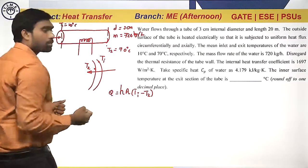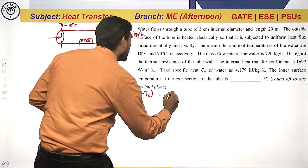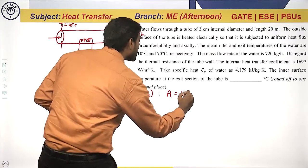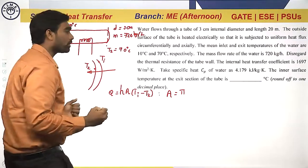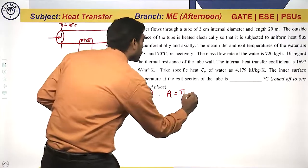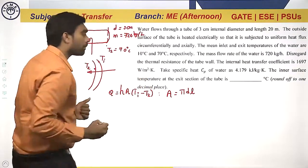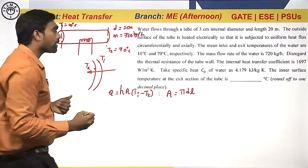The area A can be defined as the peripheral area of the pipe, which is Pi·D·L, since the pipe is subjected to heat transfer along its length. H, the heat transfer coefficient, is also given.